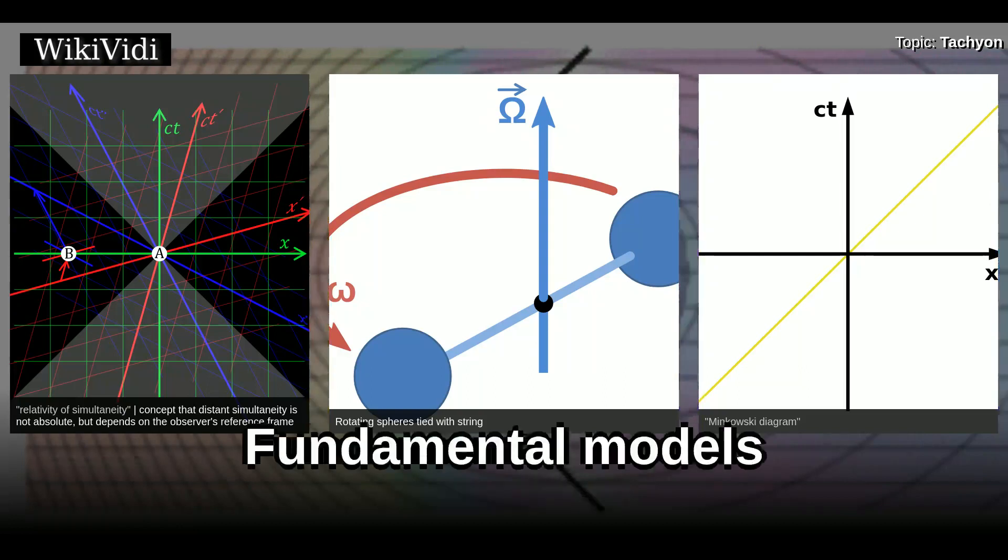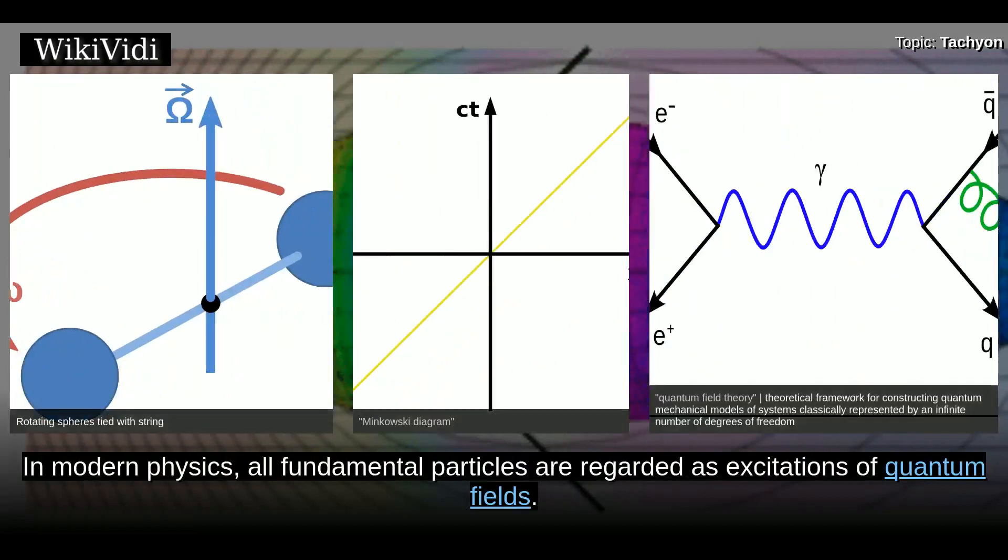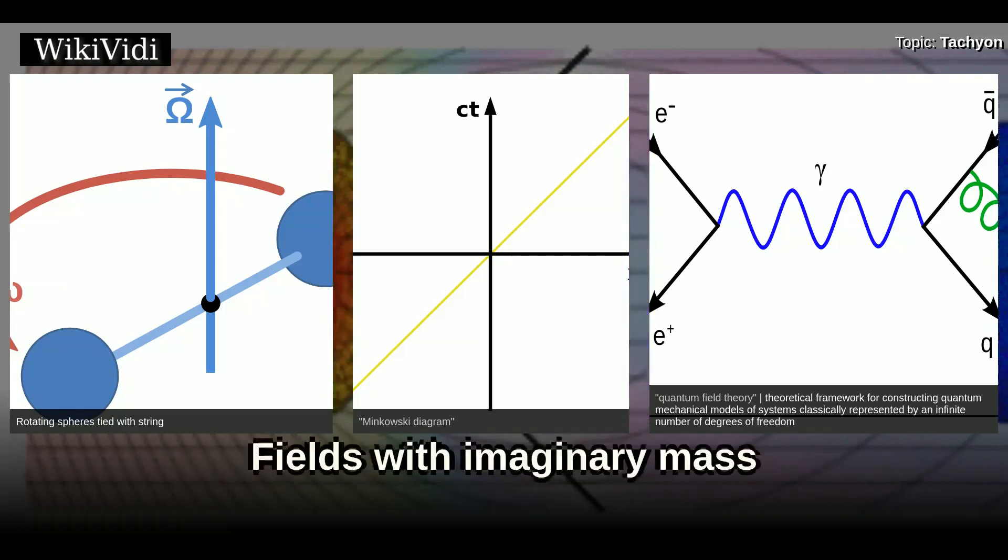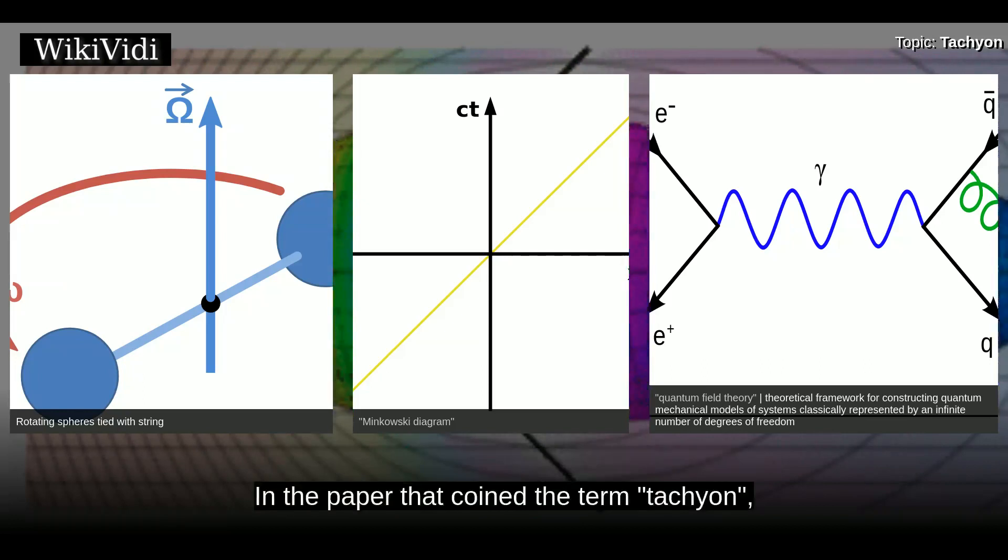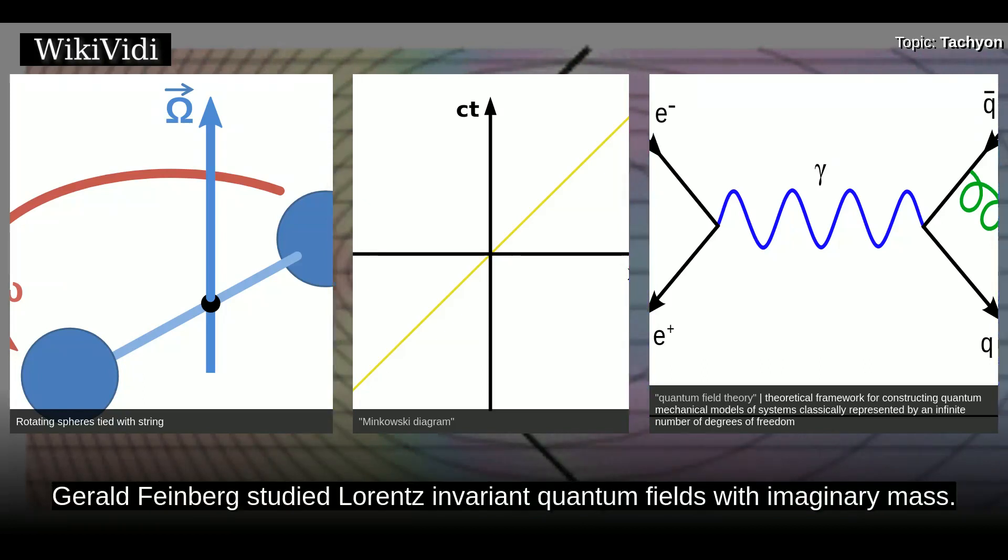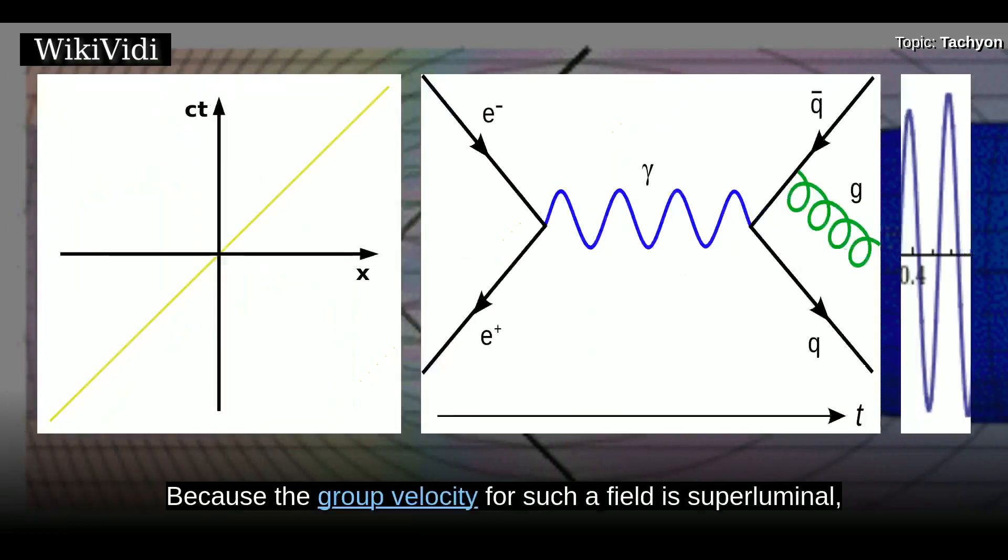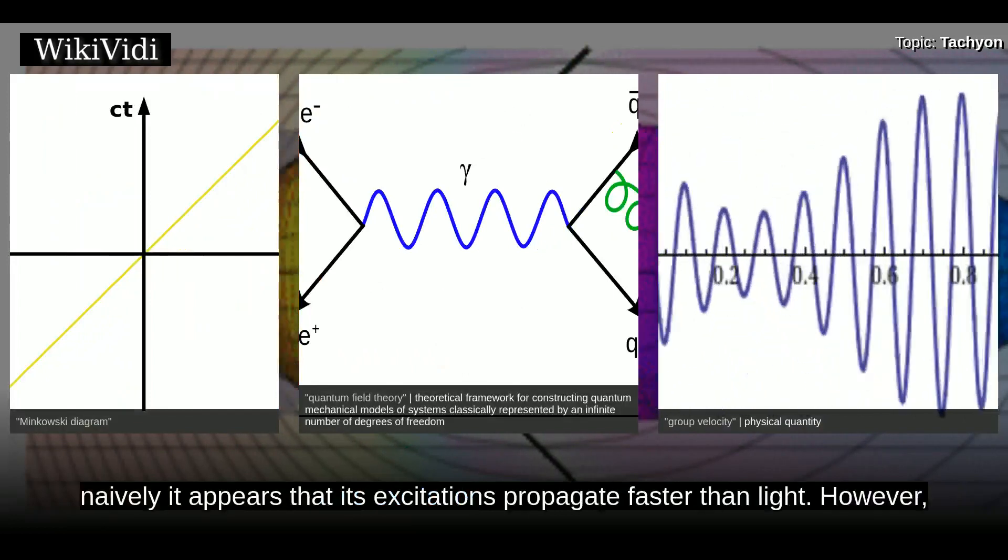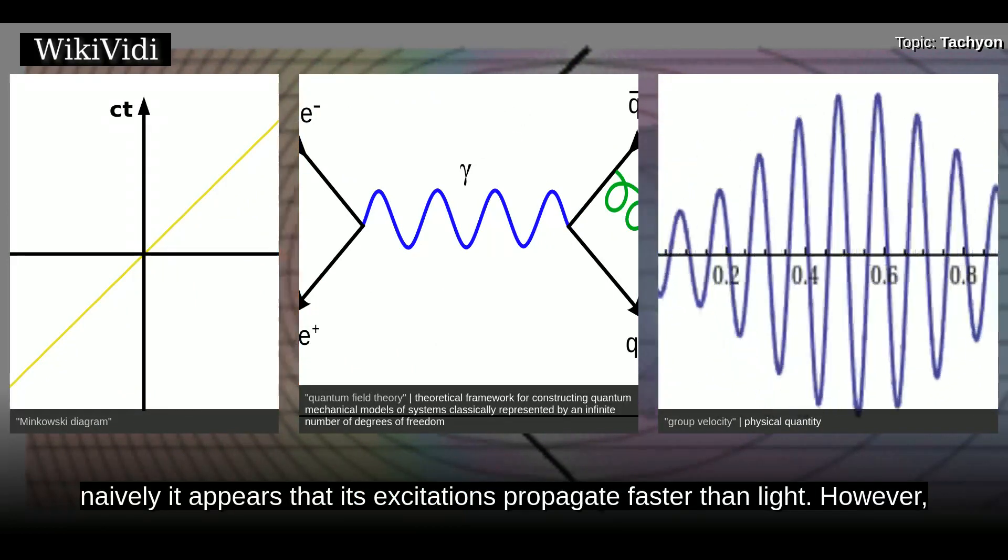Fundamental models. In modern physics, all fundamental particles are regarded as excitations of quantum fields. There are several distinct ways in which tachyonic particles could be embedded into a field theory. Fields with imaginary mass. In the paper that coined the term tachyon, Gerald Feinberg studied Lorentz invariant quantum fields with imaginary mass, because the group velocity for such a field is superluminal. Naively, it appears that its excitations propagate faster than light.